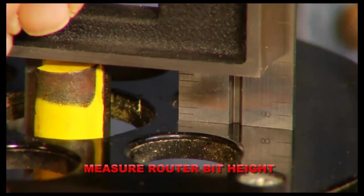When using a router, the combination square allows the bit to be set at precisely the right height.